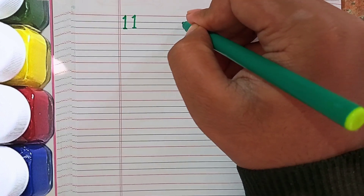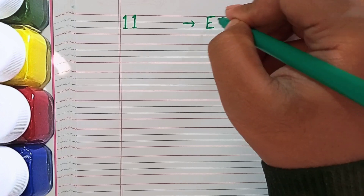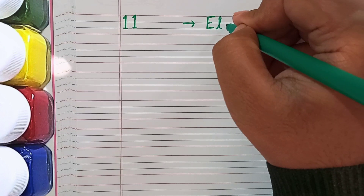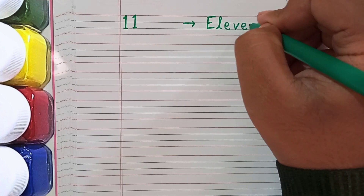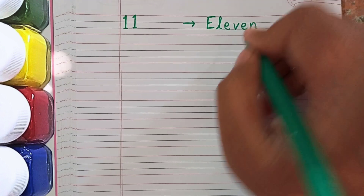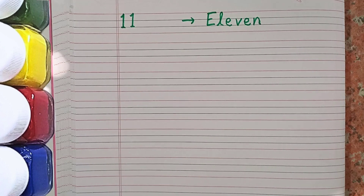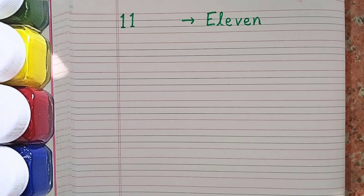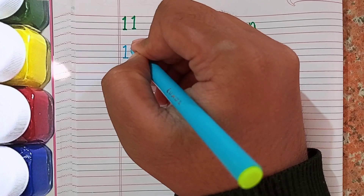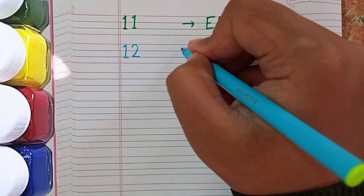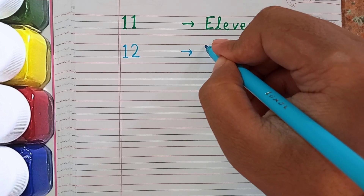11 and the spelling of 11 is E-L-E-V-E-N. Remember the spelling: E-L-E-V-E-N. After 11 the next number will be 12.